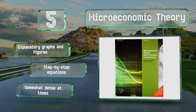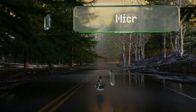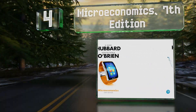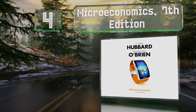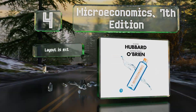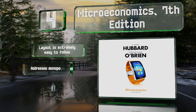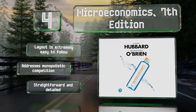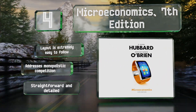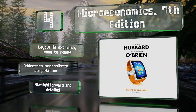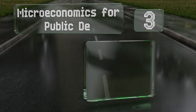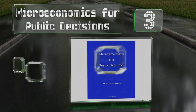At number four, Microeconomics Seventh Edition uses actual business examples and real policies to explain the forces that propel our economies. It drives concepts home by relating key ideas to personal experience and uses modern companies and their products to reinforce comprehension. The layout is extremely easy to follow and it addresses monopolistic competition. It's straightforward and detailed.